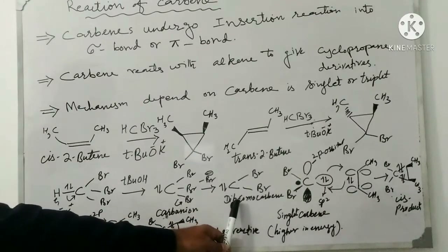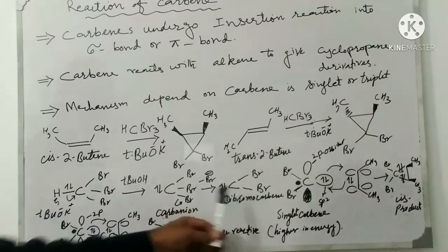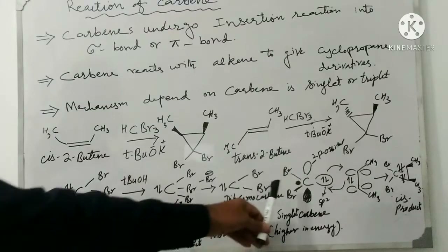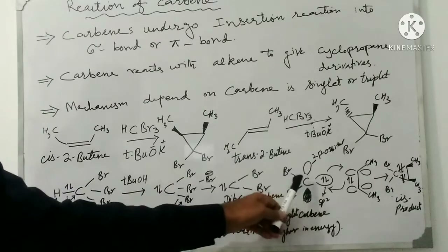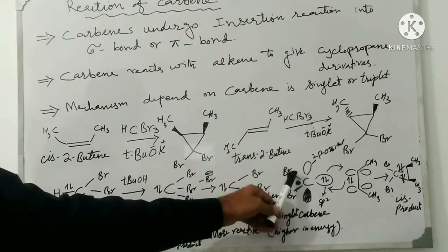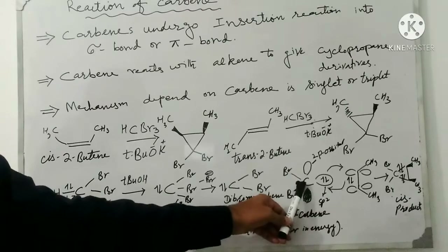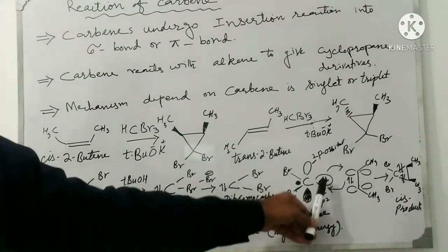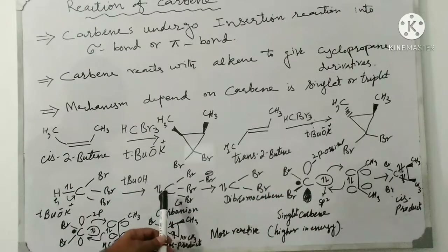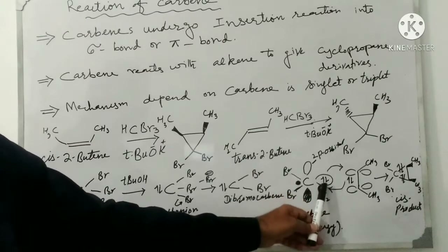Dibromocarbene is a singlet because this process takes place through an ionic mechanism. The singlet carbene has an sp2-hybridized carbon. It forms sigma bonds with the two bromine atoms through sp2–s overlap. The two lone electrons, the non-bonding electrons, occupy the same sp2 orbital, and one empty 2p orbital remains on the carbon.